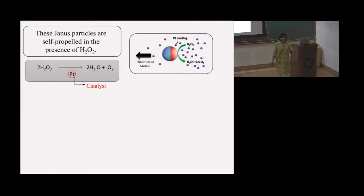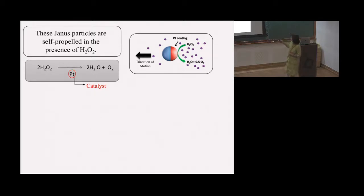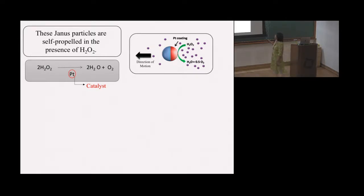What happens when you put these Janus particles in water? Nothing. But when you put them in hydrogen peroxide, a lot happens. The platinum acts as a catalyst and decomposes the peroxide into water and oxygen. As a result of the gradient in concentration of materials around the particle, the particle zooms in the forward direction — it self-propels.